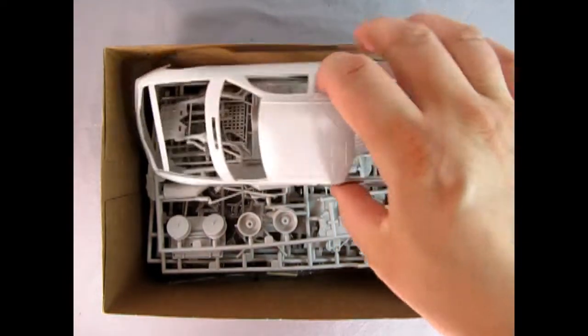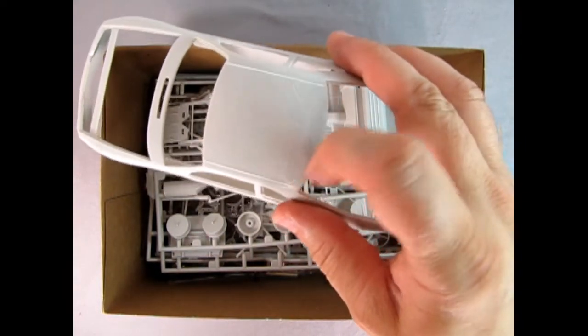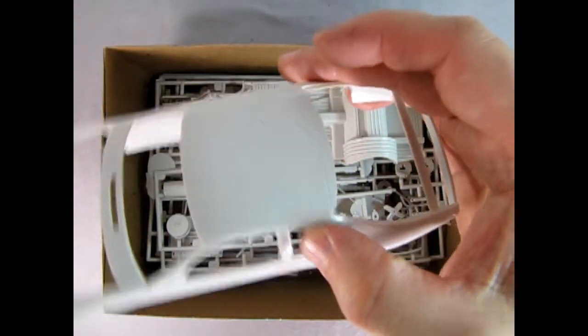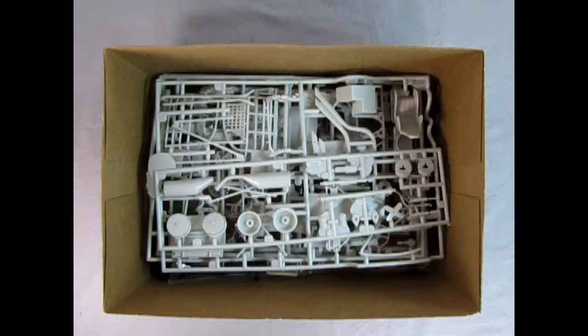Now here's our NASCAR body and I do believe this is the early years of these little wing doors and things that opened up on the roof. So that's pretty cool that they're molded in. There's our chassis.